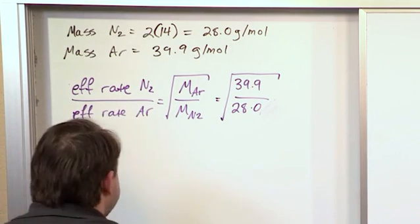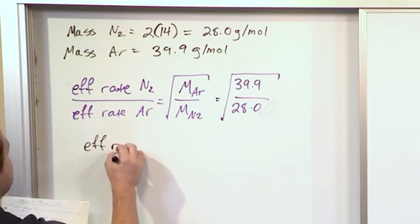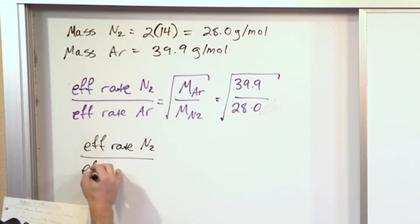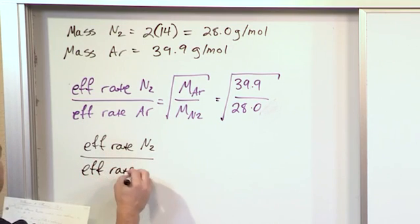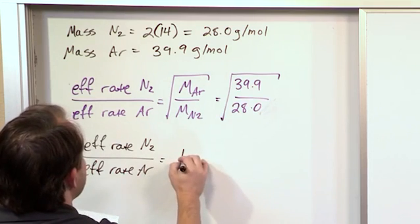And then we will say that the effusion rate of N2 as a ratio compared to the effusion rate of argon gas. You divide these guys and then take the square root, you get 1.2.